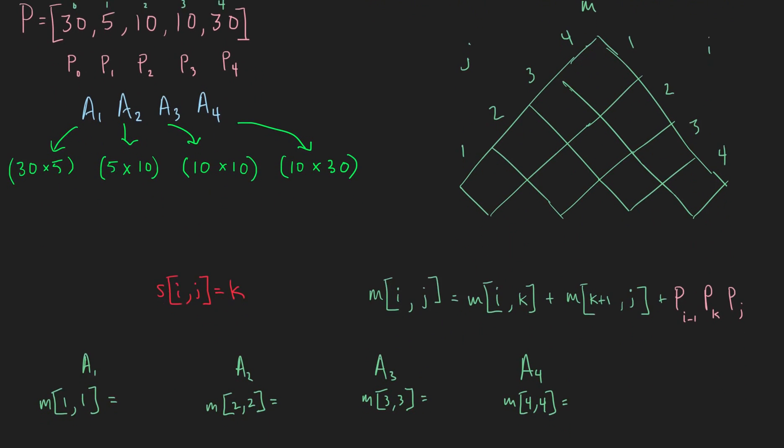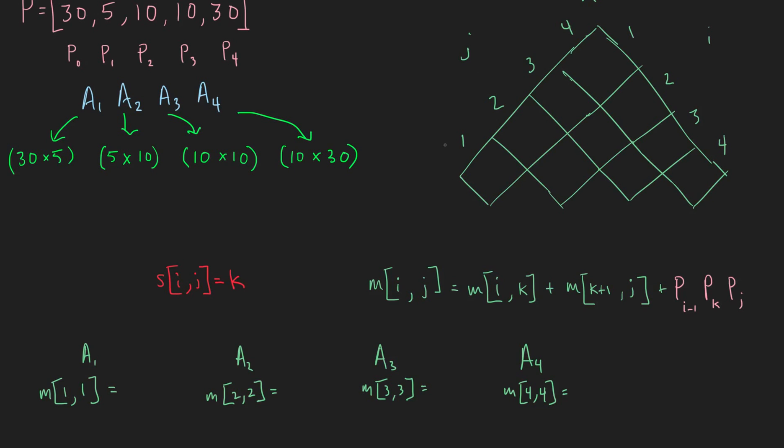So first off, we need to fill out this table, and we will start at the bottom. So M[1,1] would be here. And that's just matrix A1. So how many scalar multiplications does it take to get A1? Well, zero, because it's just one matrix. We're not actually doing any multiplication. So same thing with all of these. So we can fill that bottom row in like that.